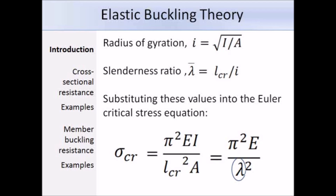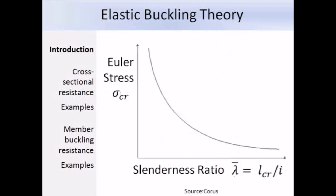Here is a graph of the slenderness ratio lambda-bar plotted against Euler stress. As you can see, the larger the slenderness ratio, the smaller the Euler stress will be, and in turn the smaller the value of the collapse load N_CR. So if we are looking to withstand a large collapse load, we need to have a low slenderness ratio.